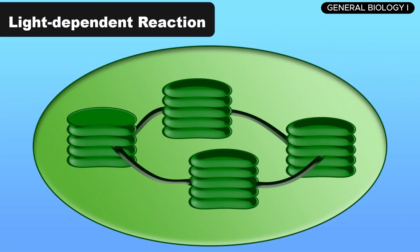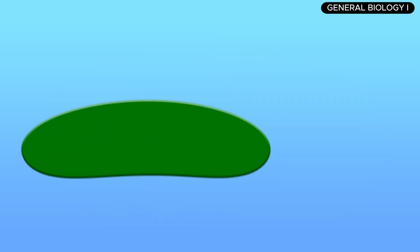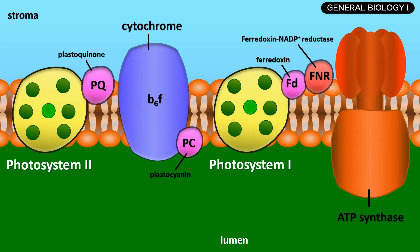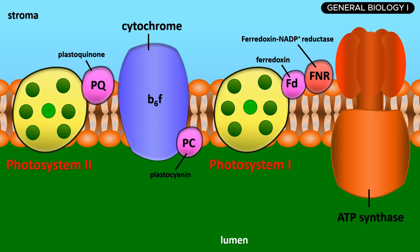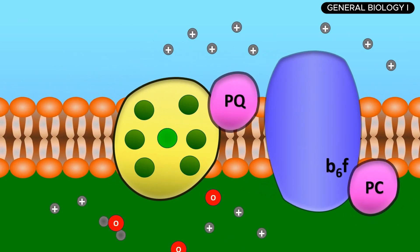Photosynthesis begins with the light-dependent reactions, which take place in the thylakoid membranes of the chloroplast. This phase requires sunlight and involves two key structures: Photosystem II and Photosystem I. These photosystems are groups of pigments and proteins that work together to capture light energy. Let's first take a look at Photosystem II.